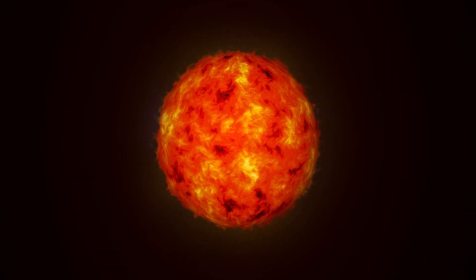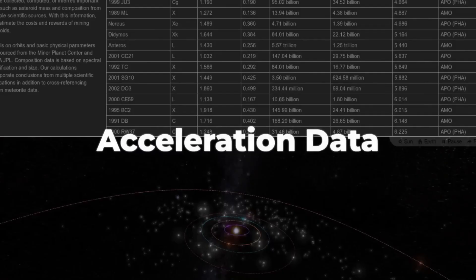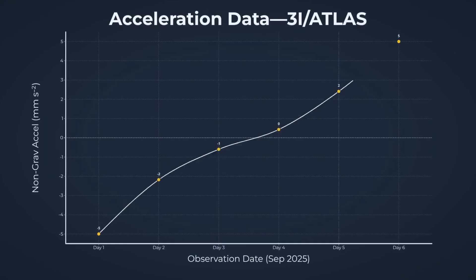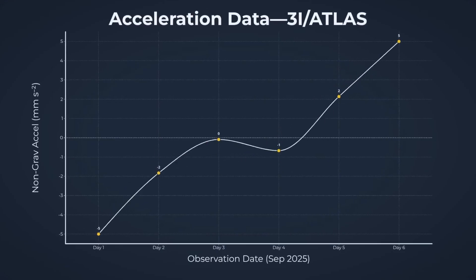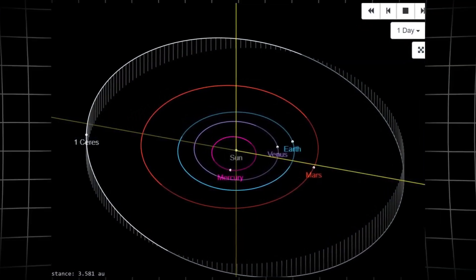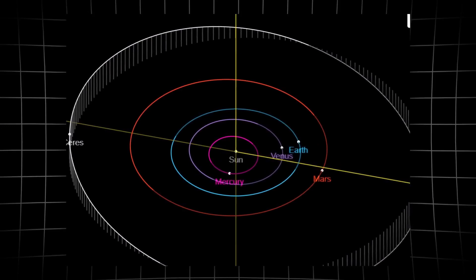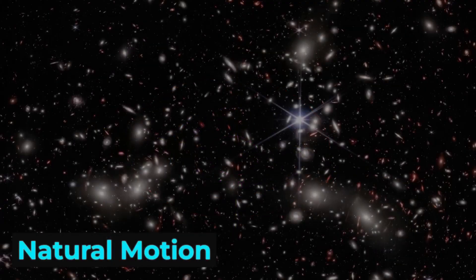As new data floods in from space-based observatories like JWST, and as the object arcs ever closer to the sun, every fresh measurement is subjected to the same battery of relentless statistical tests. The margin for error shrinks with each passing night, and the hunt for a subtle thrust-like signature continues.